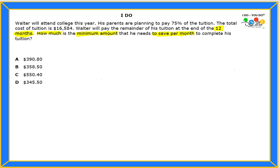Okay, what else do we know? Well, we know the cost of the tuition is this much. And we know he's not alone, because his parents, they're gonna help him pay for it. And they're gonna pay 75% of the tuition.